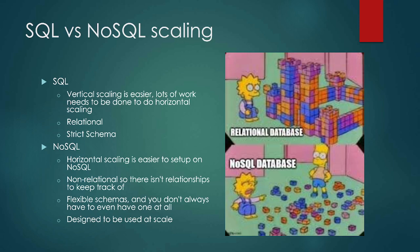NoSQL, however, was actually designed to be scalable. Horizontal scaling is actually easier to set up on NoSQL. It's not relational, so there aren't relationships to keep track of — it's the pile of blocks. It's got a flexible schema, and you don't always have to have one, but it was designed to be used at scale. The things we worried about for SQL, we don't really have to worry about the same way with NoSQL.